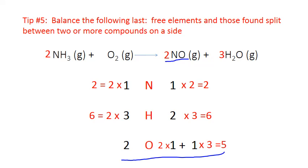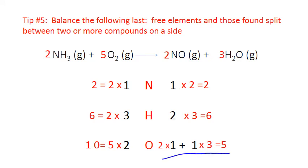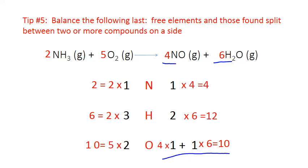The least common multiple of two and five is ten, so we try to get ten on both sides. On the left-hand side, place a five in front of the molecular formula for oxygen: five times two gives ten. On the right-hand side, we need to multiply that oxygen by two to give ten, so we multiply both of those coefficients in the equation by two. That means four times one plus one times six gives ten oxygens on each side. Changing these coefficients also changes the nitrogen and hydrogen, so we update those in the atom inventory to four and six — giving four atoms of nitrogen on the right and twelve hydrogen. Now they're off again.